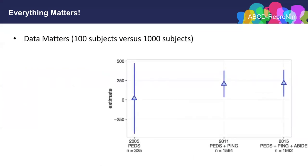Similarly, how much data you have matters. Looking at the hippocampus sex effect between males and females: if you thought about this question back in 2005, one of the largest datasets you might have had access to is the NIH Pediatric database with 325 subjects. You look at that data for a sex effect of hippocampal volume, and you would not observe that.